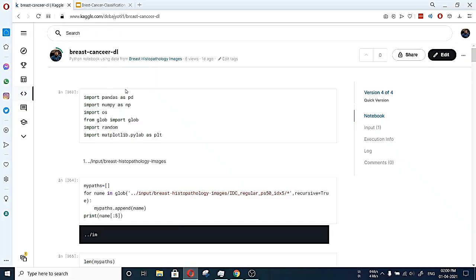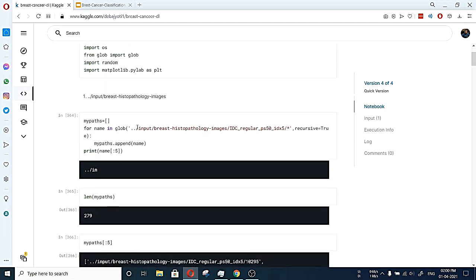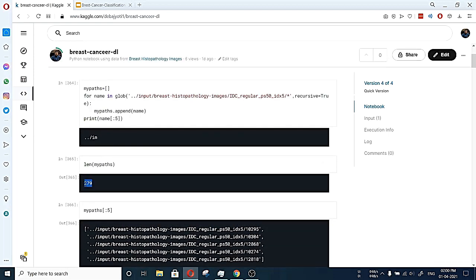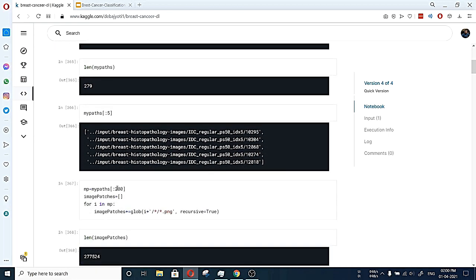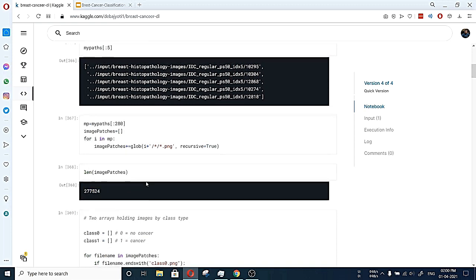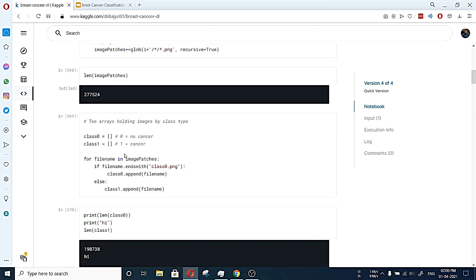Here is our breast cancer deep learning model. We just imported all the libraries here. And here we are storing the paths of each images. And we got around 279 total folders and total number of images is around 277,524. After that, we just classified as it was already labeled as class 0, class 1. And we just stored them in class 0 list and class 1 list according to the label.